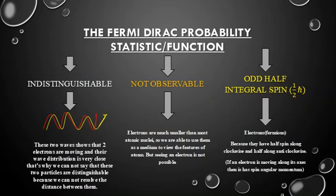The Fermi-Dirac probability function has three features: number one is indistinguishable particles, number two is not observable particles, and number three is odd half-integral spin — that is, spin-half h-bar — due to which this is a quantum mechanical treatment.